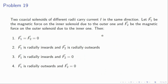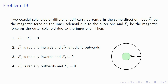Problem 19: two coaxial solenoids carry current in the same direction. F1 is the force on the inner solenoid due to the outer, F2 is the force on the outer due to the inner. Looking from the top, same-direction currents attract on one side but the geometry is symmetric all around — the net force on each solenoid is zero. Option 1 (F1 = F2 = 0) is correct.